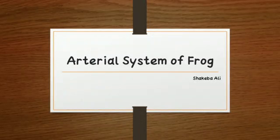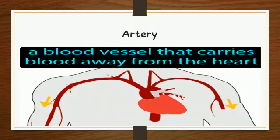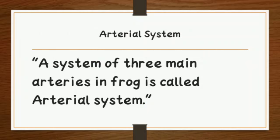Today's topic is the arterial system of the frog. First, what is an artery? A blood vessel which carries blood away from the heart to the various body parts is called an artery. As we know, arteries contain oxygenated blood, except the pulmonary artery. The arterial system can be simply stated to comprise three main components.